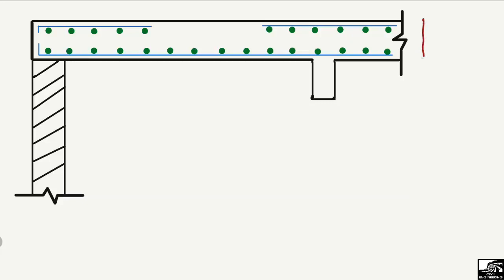For example, a slab with a depth of 15 centimeters — this may vary depending on the design. The slab is supported on two structural members: one is a wall on which the slab is supported, and the other end of the slab is supported on a beam.